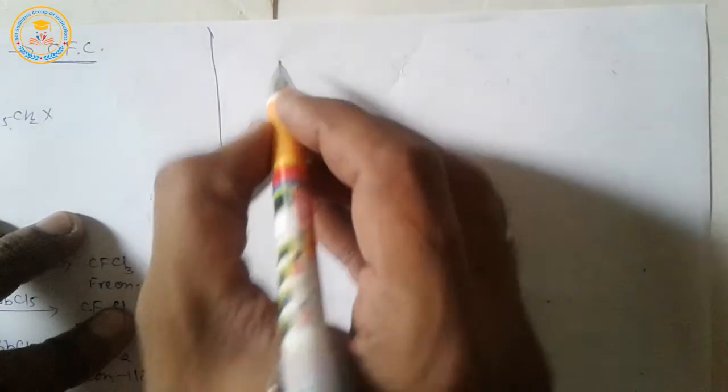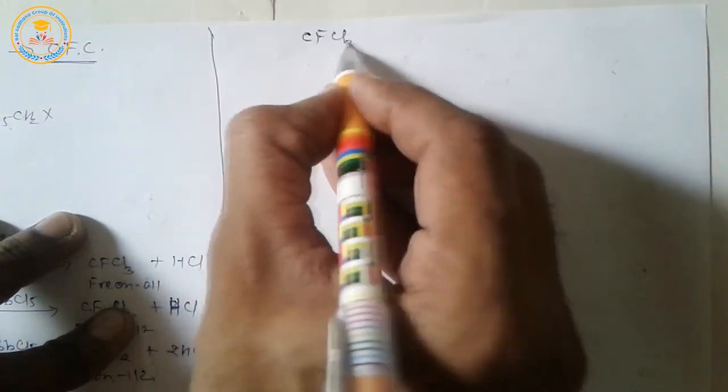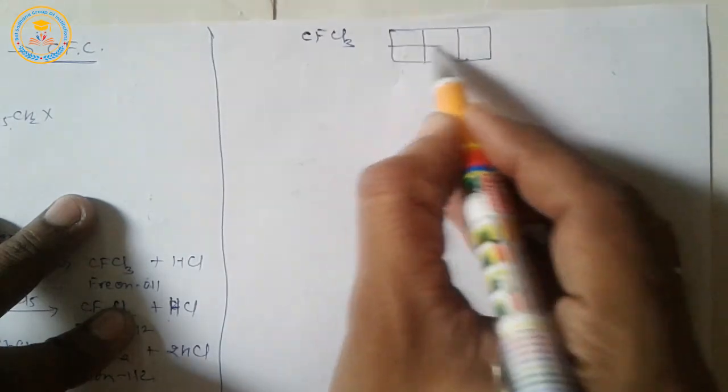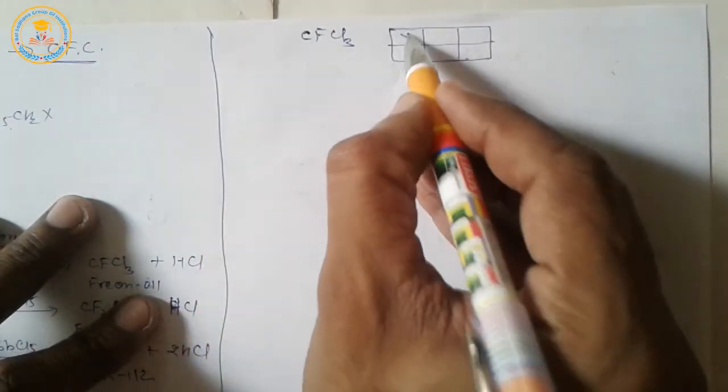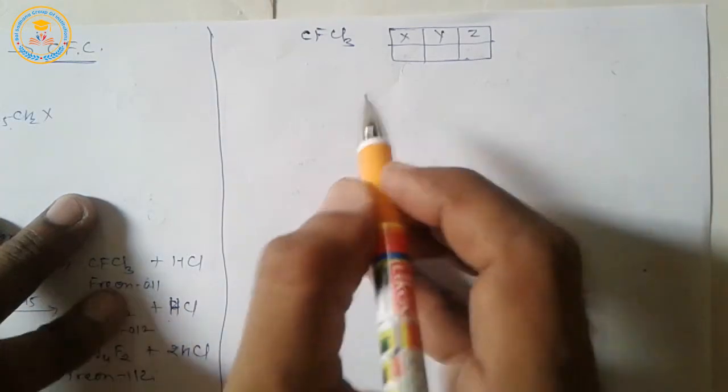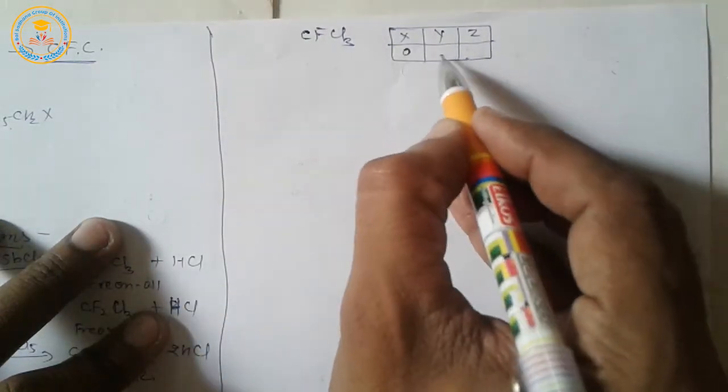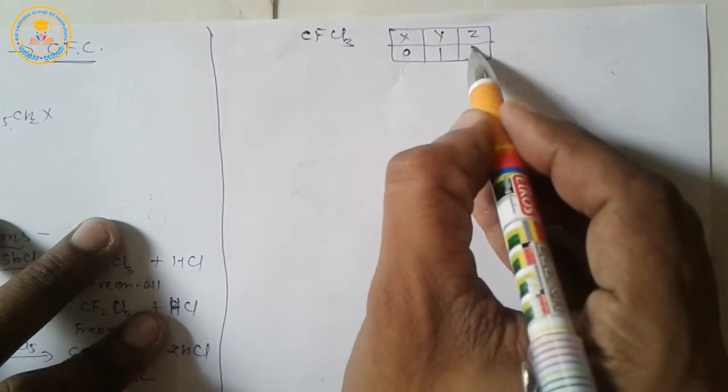For example, CFCl3. For CFCl3, values of X, Y, Z: For X, 0. For Y, 1. For Z, 1.